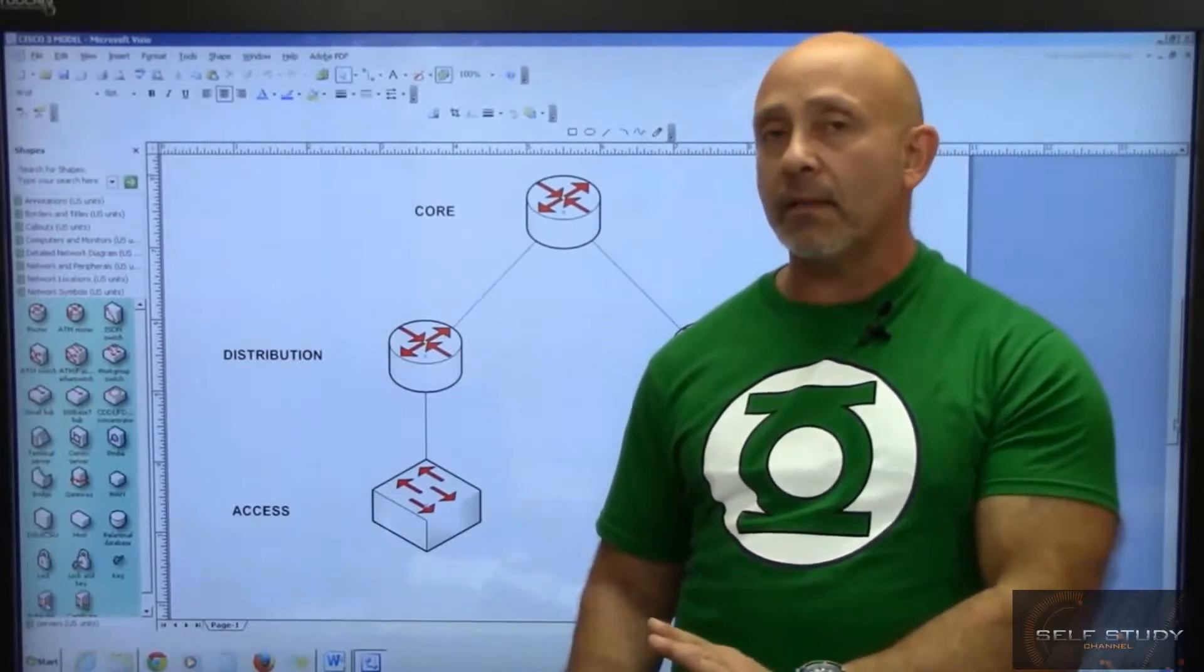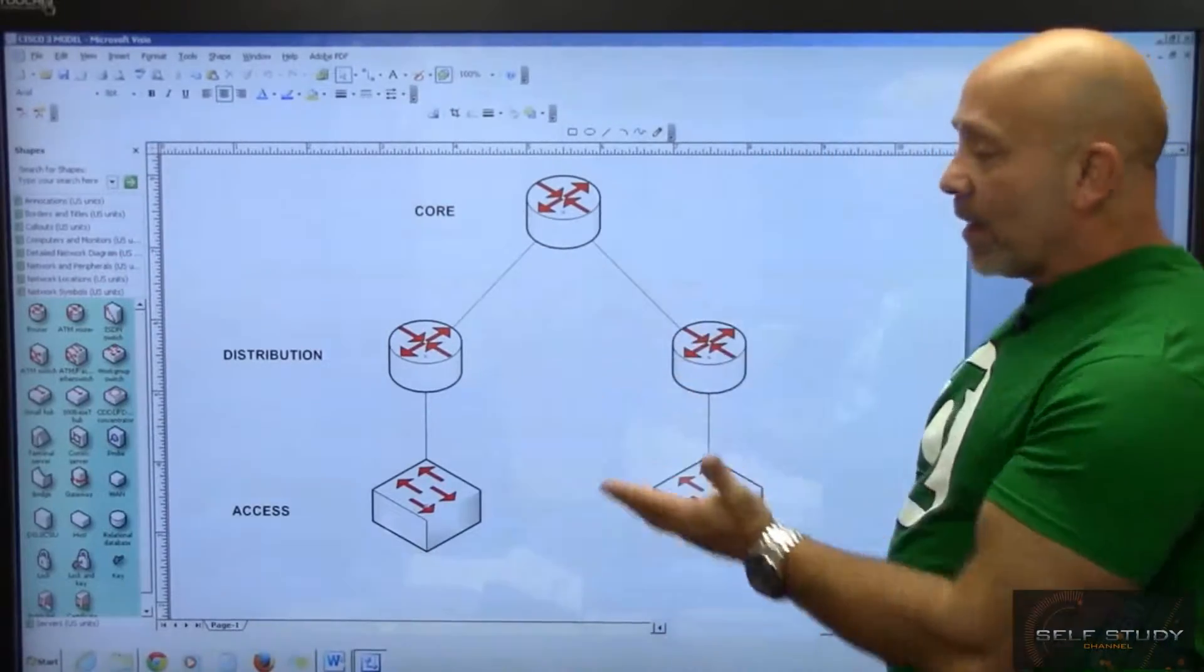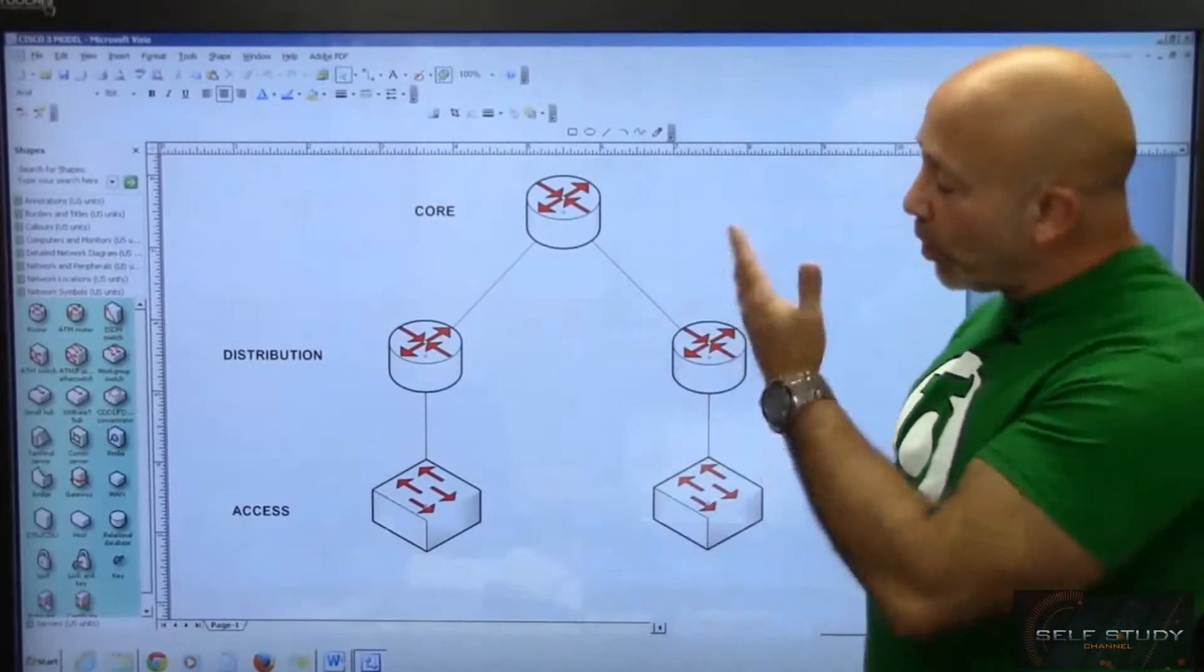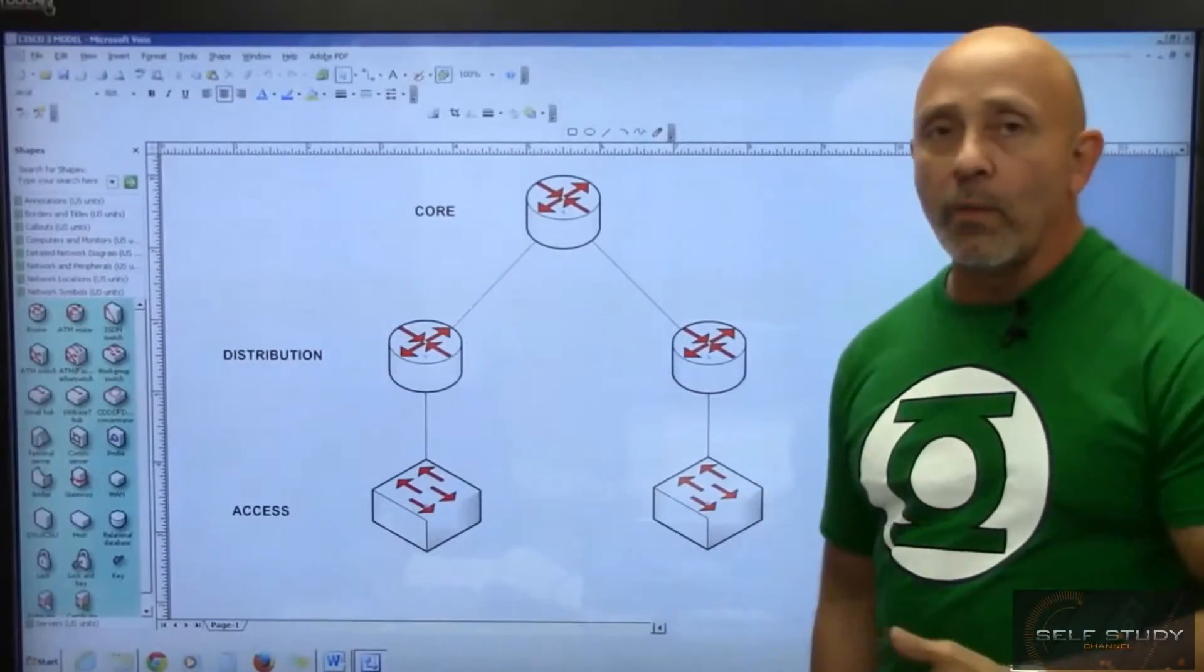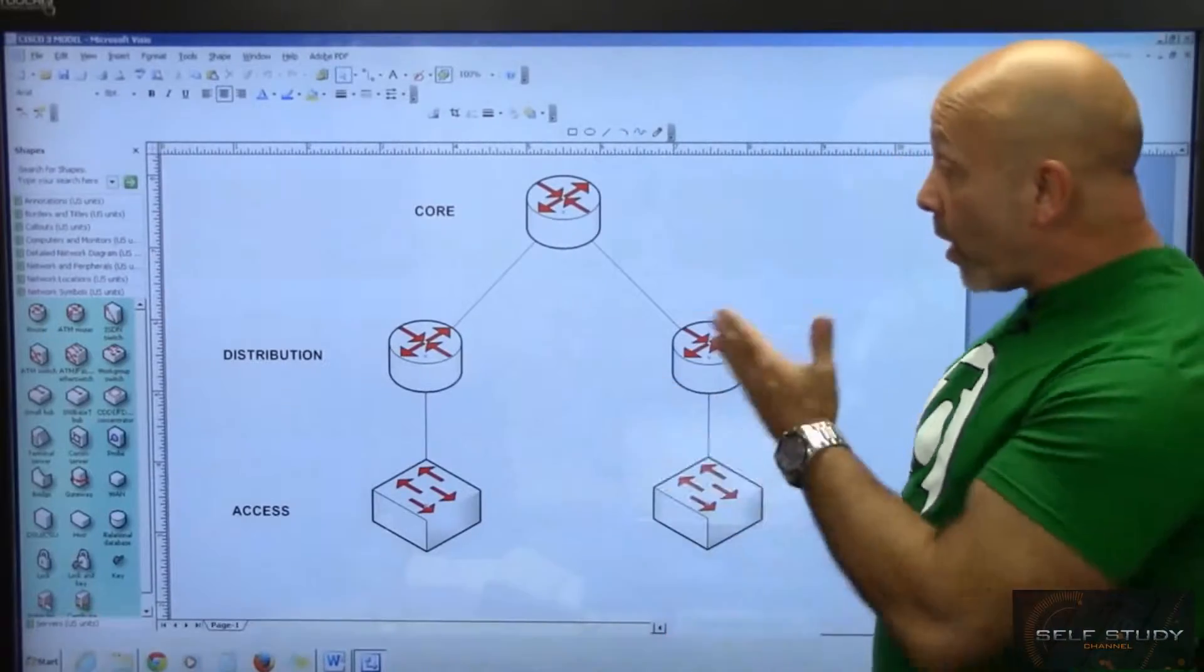Your core router—this is not a good representation, I'm just showing you the three layers—needs to have redundancy, because if one of those links goes down, every user gets affected.